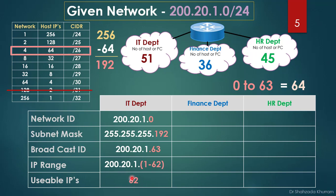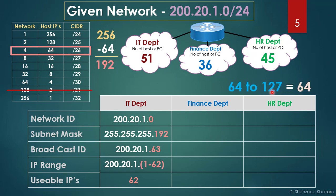The usable IP range for IT department is 200.20.1.1 to 200.20.1.62 — that's 62 usable IPs. For Finance department, we add the next block of 64: the previous broadcast was .63, so the next network ID is 200.20.1.64. The subnet mask remains 255.255.255.192, and the broadcast ID is 200.20.1.127.